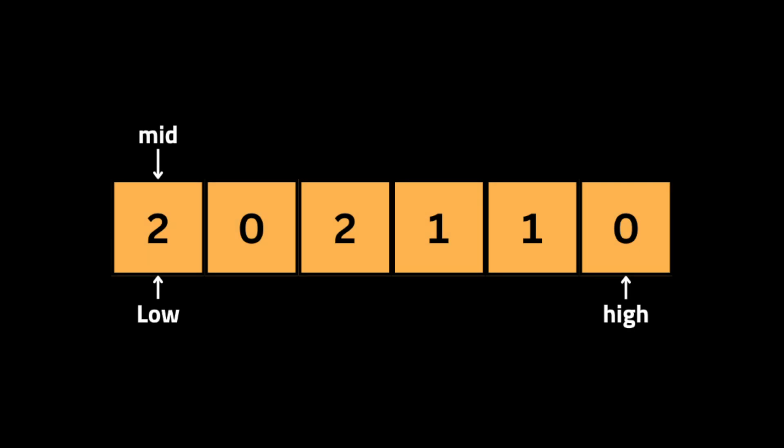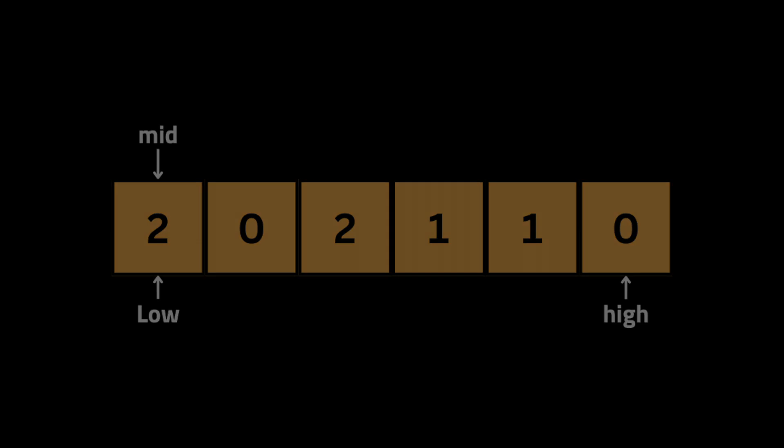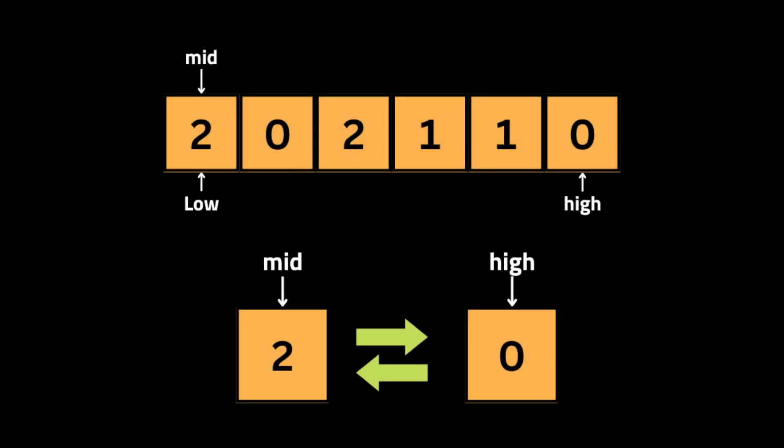Given an input list, the first thing we do is initialize three pointers: low, middle, and high. The low pointer keeps track of the zeros to ensure they are at the beginning. The high pointer keeps track of the index of integer two to ensure they are placed at the end of the list. The middle pointer loops throughout the array, checks the value at each index, and performs an action based on the integer to ensure each number is placed in the correct position.